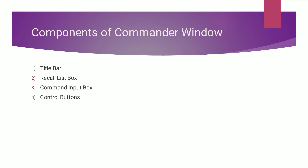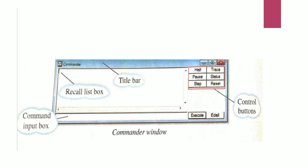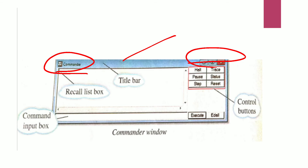Now we are going to see the second window of your MSW Logo screen — the commander window. The components of the commander window are: title bar, recall list box, command input box, and control buttons. On this screen you can see the title bar with basic control buttons, the recall list box, the command input box, and the control buttons.